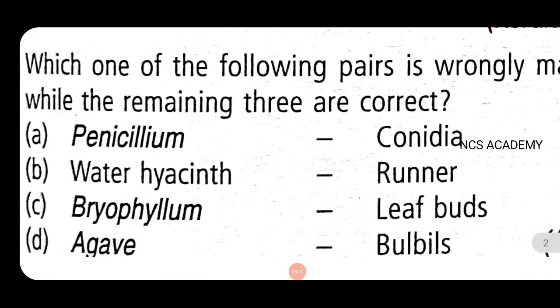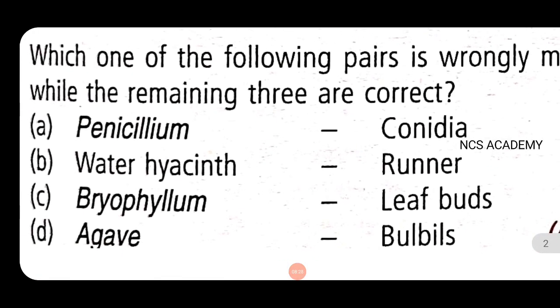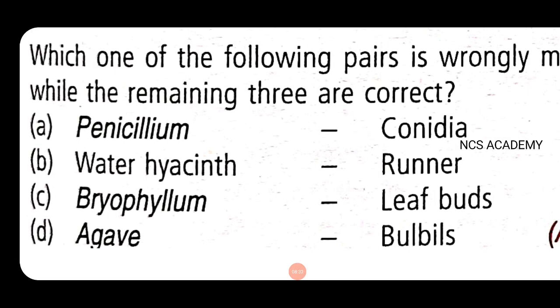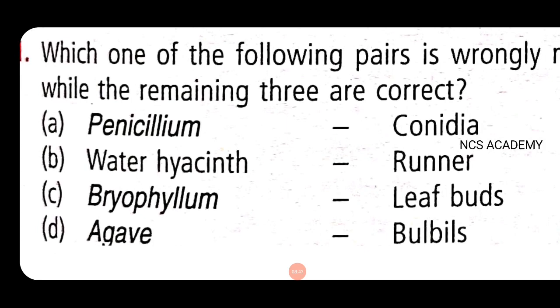Next question, AIPMT: Which of the following pairs is wrongly matched while the remaining three are correct? This is the right option. Penicillium notatum forms conidia. Water hyacinth - from the previous question, so it is wrongly matched. Leaf bud formation, agave bulbils formation, so wrongly matched. Water hyacinth runner, this is the right option.